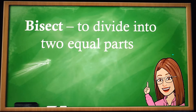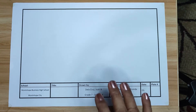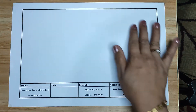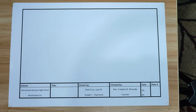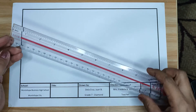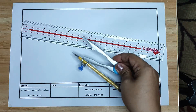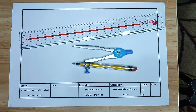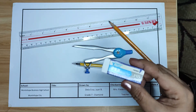When you hear the term bisect, it means you are going to divide into two equal parts. Materials needed are: drawing paper with borderline and title block, foot rule, drawing compass, pencil, and eraser.